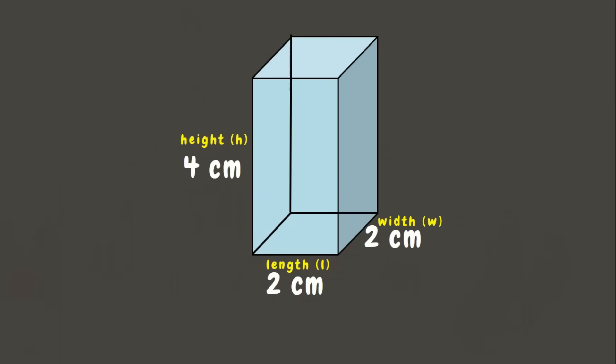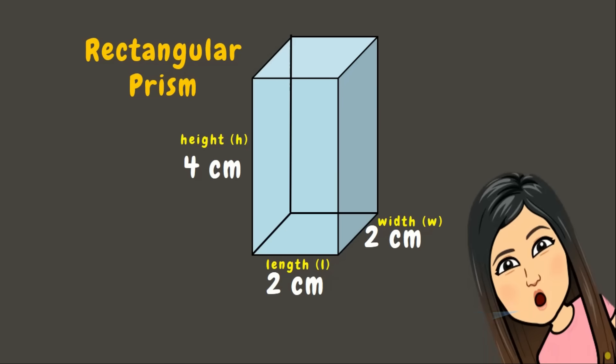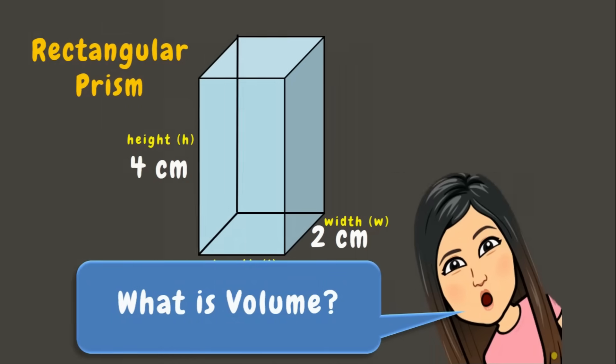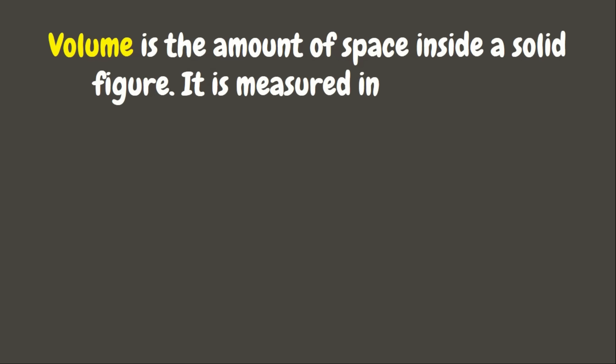We have here a tank in the form of a rectangular prism. Its height measures 4 centimeters, length 2 centimeters, and width 2 centimeters. Now let's solve for its volume. But first, let's have a quick recap on what volume means. Volume is the amount of space inside a solid figure or three-dimensional figure.